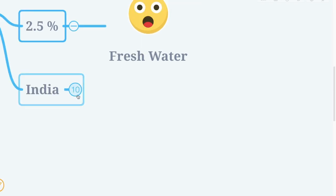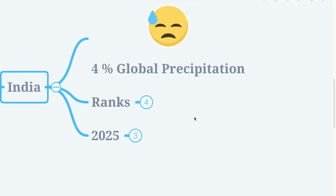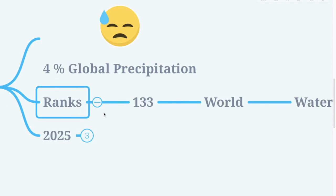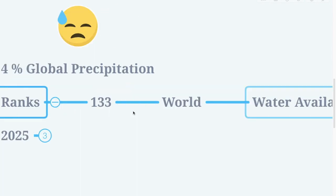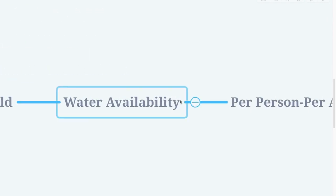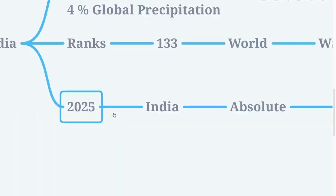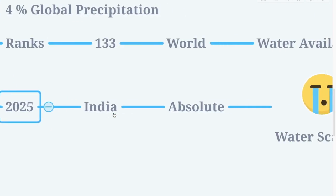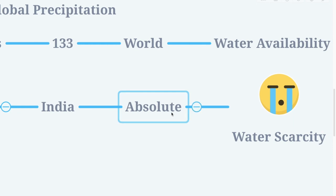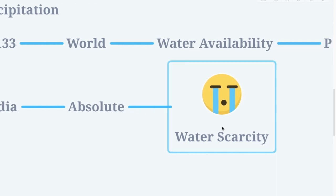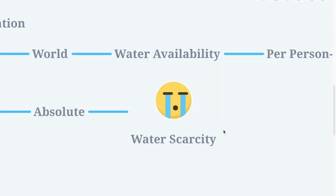Let's turn our eyes towards India. India receives nearly 4% of global precipitation and ranks 133rd in the world in terms of water availability per person per annum. By 2025, it is estimated that India will have absolute water scarcity.